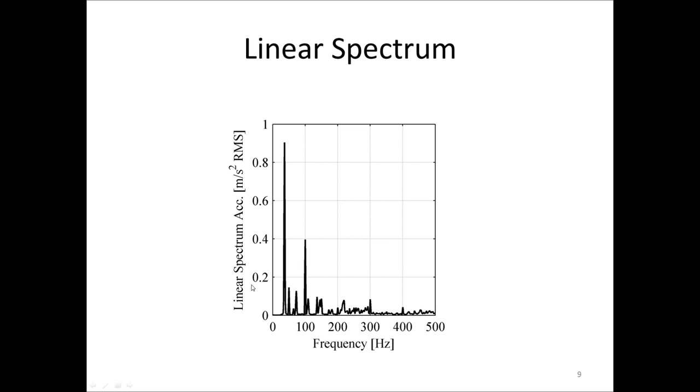As you see, the y-axis is scaled in linear spectrum acceleration in meters per second square RMS. This is important, the RMS is important, and we will talk more about it in lecture 6 on spectrum estimation. The important thing is that a peak corresponds to the RMS level of a sign component, and not to the amplitude.